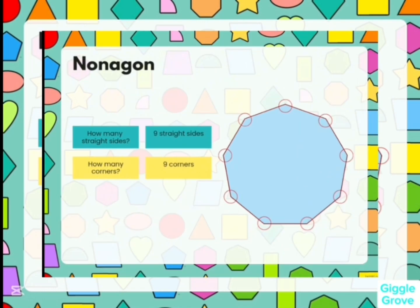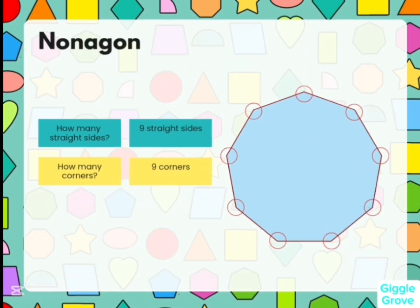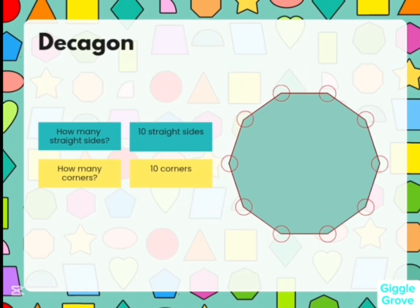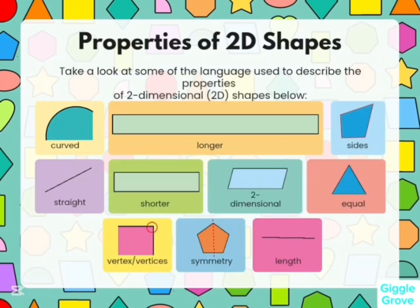Now let's discuss the properties of nonagon. How many straight sides do you see? There are nine straight sides. And how many corners? There are nine corners. Now we will discuss decagon. How many corners? There are 10 corners.